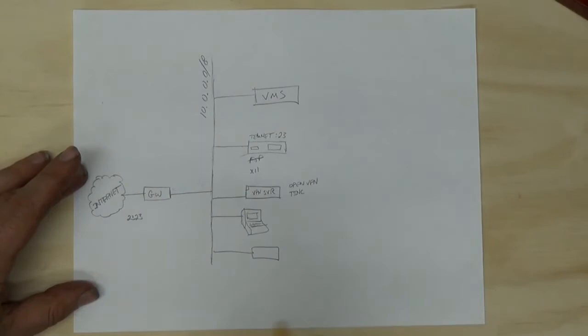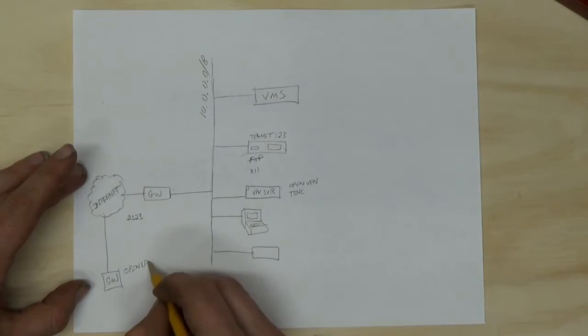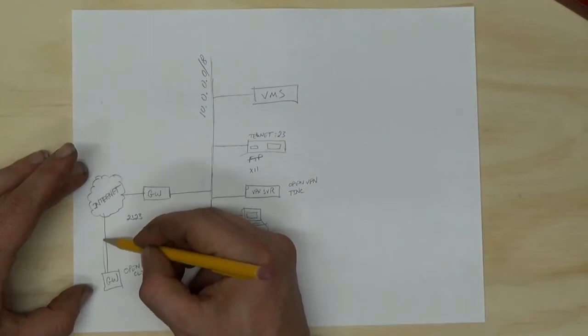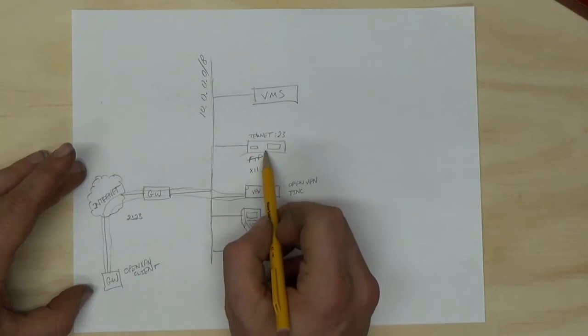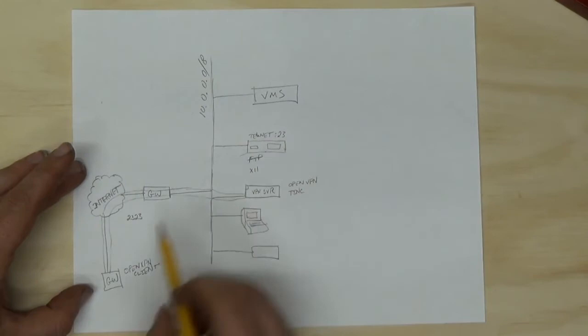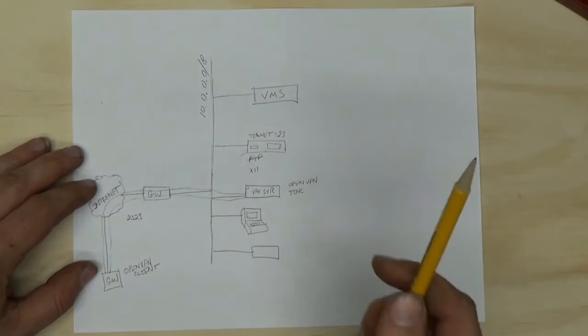But we can forward those ports so that somebody running OpenVPN client software down here somewhere with their own machine, they can run OpenVPN client software. And that essentially makes them part of this network. It creates a tunnel through the internet and through this port forward and attaches them to this VPN server. So all of a sudden they're part of this LAN, even though they're on the other side of the world or something. And then when they try to run X11 programs on one of these old UNIX machines, they can have their display environment variables set to whatever IP address that they get from the OpenVPN server on this machine. And they can be an actual part of this network of old computers, which is pretty cool, right?